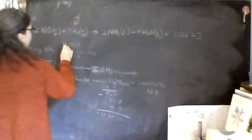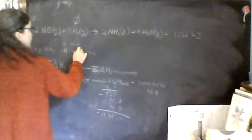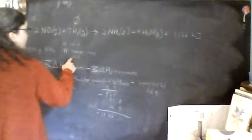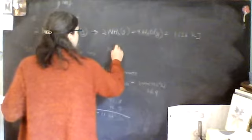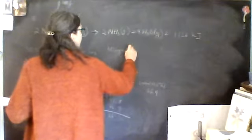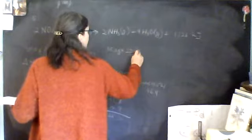Yeah, NH3. 3 times 1.01, so it's 17.0 grams per mole. So we've got 35.0 grams times 1 mole per 17.0 grams.